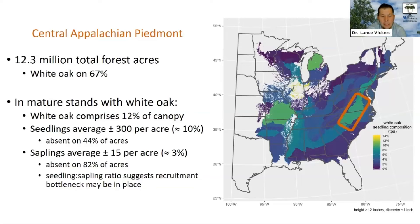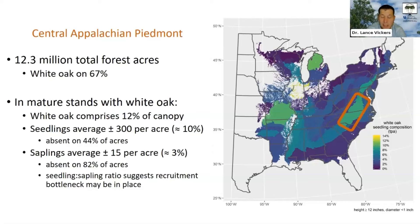However, around 44% of the understory acres in the Piedmont have no White Oaks present at all. Looking at saplings — seedlings that have grown to a diameter of around one to three inches — there are only 15 per acre, even though we have 300 seedlings. Those White Oak saplings make up only 3% of all saplings present. That seedling-to-sapling ratio suggests we may be having some recruitment bottlenecks — trouble getting seedlings to move into the sapling size class and then into larger size classes.